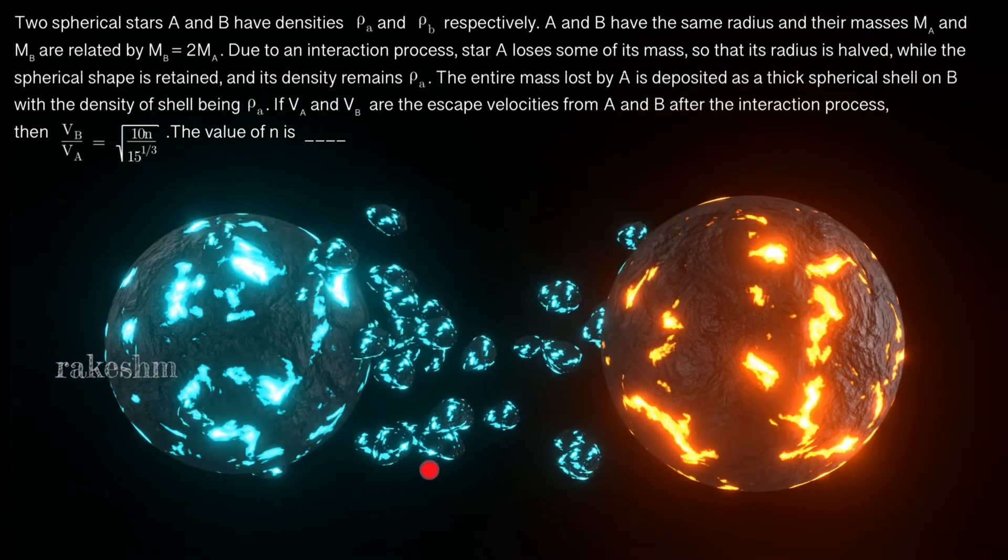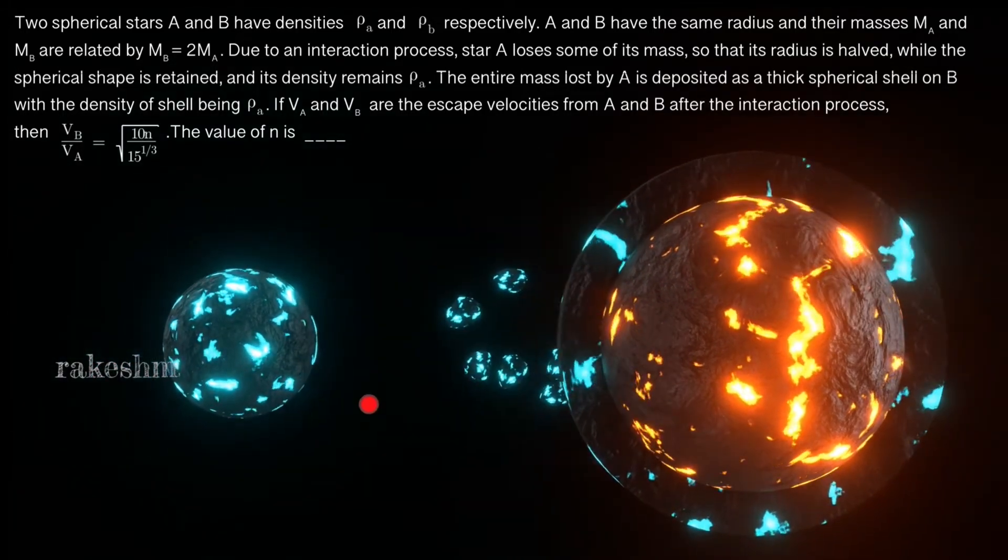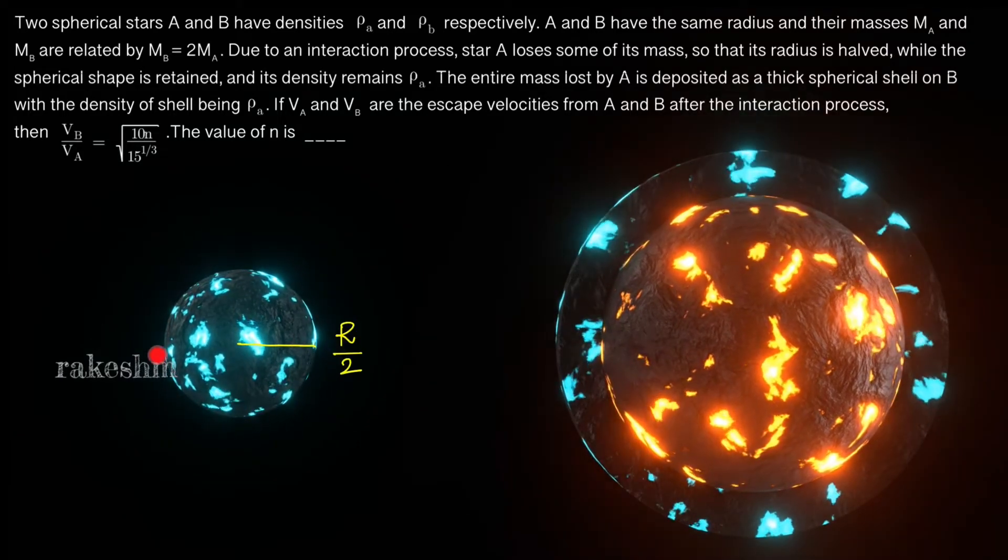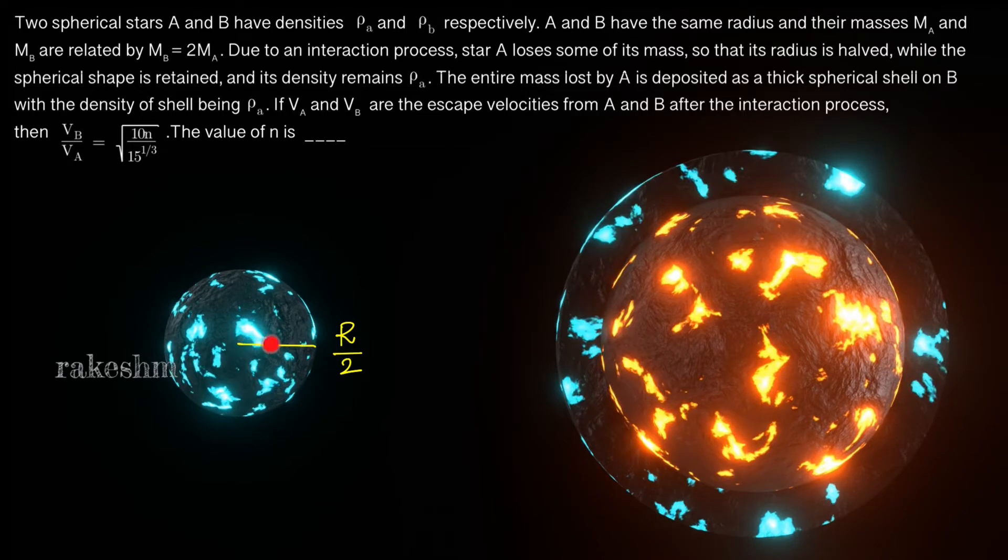Due to interaction process, star A loses some of its mass and its spherical shape is retained and its radius becomes half. The entire mass lost by A is deposited as a thick spherical shell on B with the density of the shell being ρ_A.